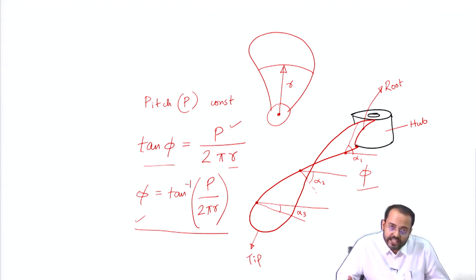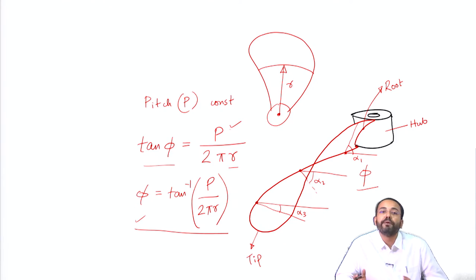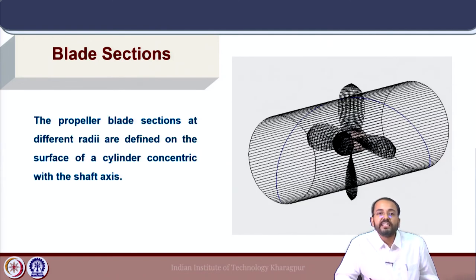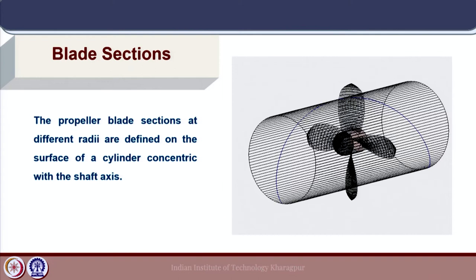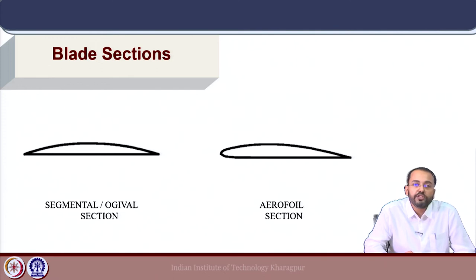A propeller blade can also have pitch that varies with radius, which can be adopted for specific propeller designs depending on inflow characteristics. A blade section is defined by intersecting a propeller blade with a coaxial cylinder at any radius — the section obtained is the blade section at that particular radius. The typical sections used for propeller blades are segmental sections and aerofoil sections.